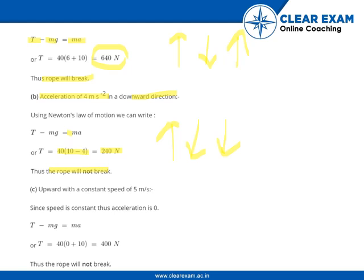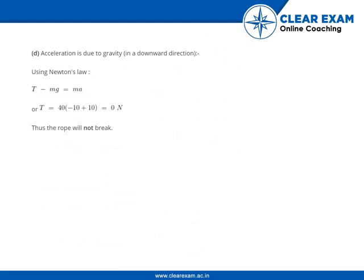In case C, the monkey moves upward with a constant speed of 5 meters per second. Thus the acceleration is 0, therefore the tension equals mg. After putting in the values, the tension in the rope would be 400 Newton's. Thus the rope will not break.